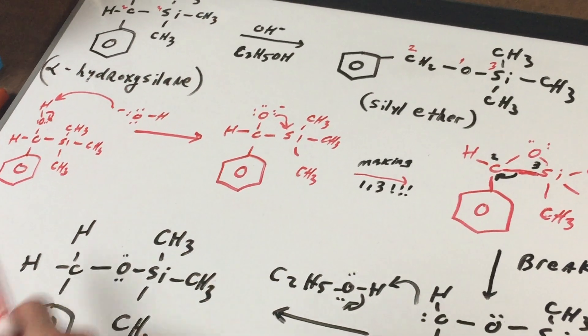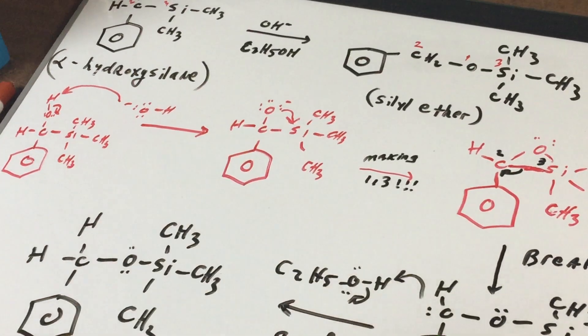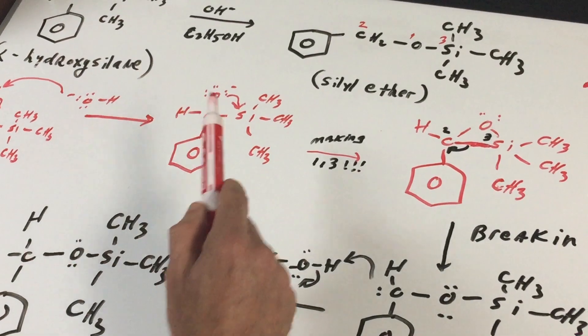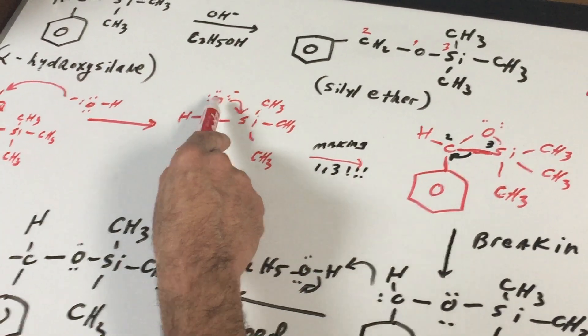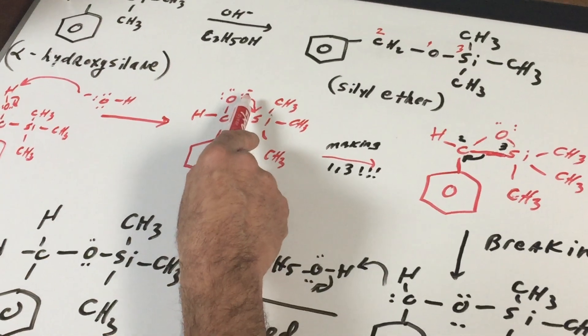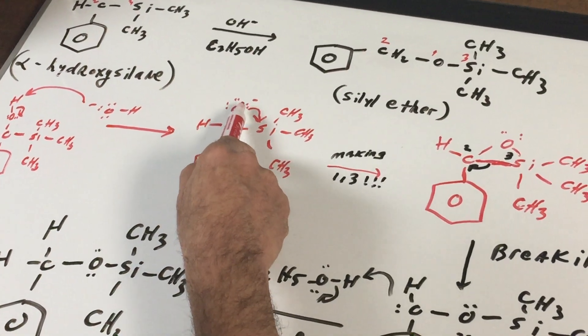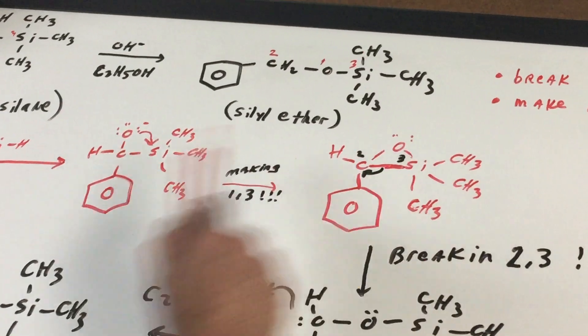So you should be able to understand these two arrow movements for the DAT. The base comes in, deprotonates it, and there's my anion. Now watch the next move. What I'm next going to do is an intramolecular attack on the silicon. Now why I'm excited about this is because this gives me my opportunity to make one-three. Notice I've made this three-membered ring.